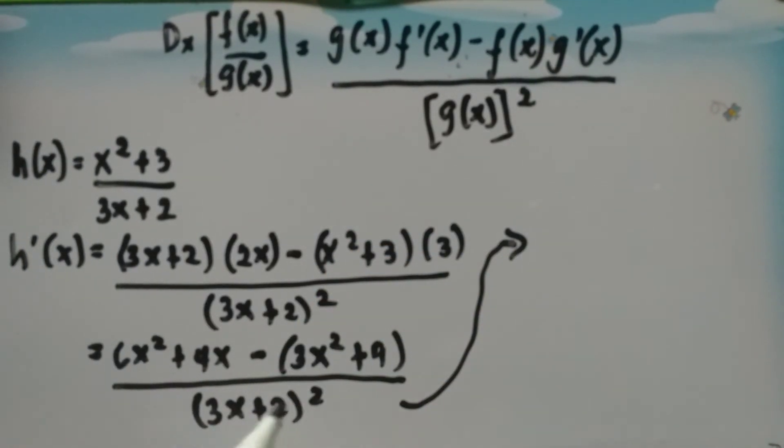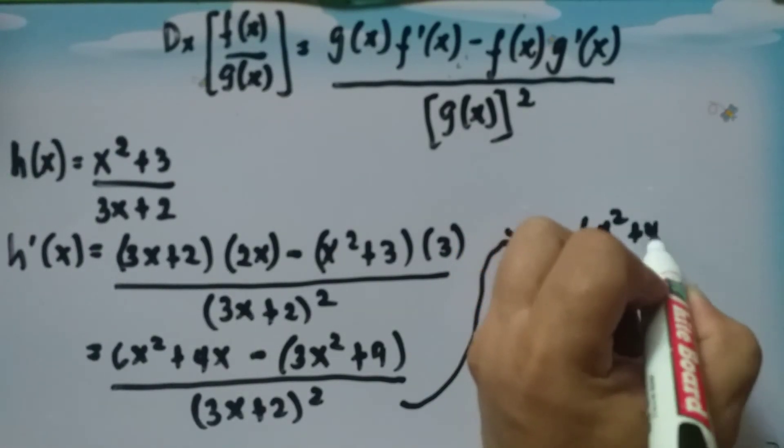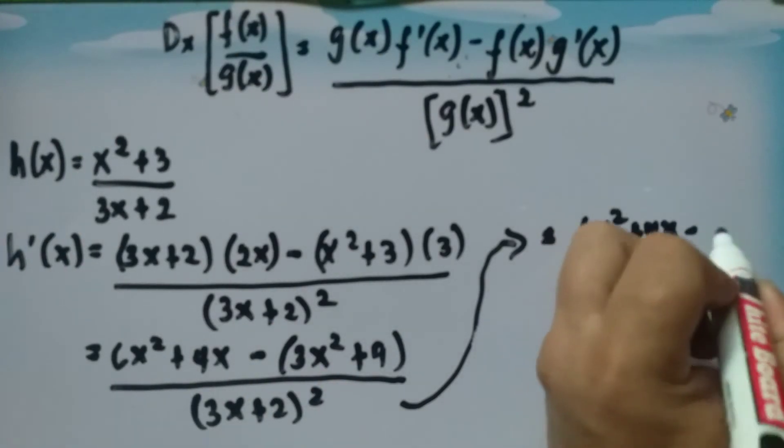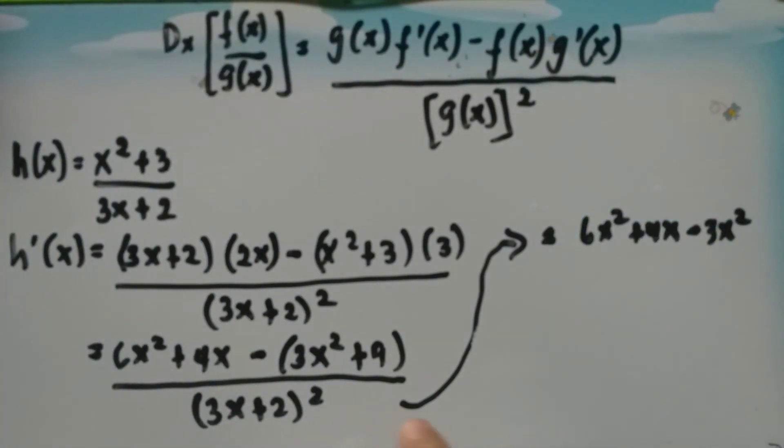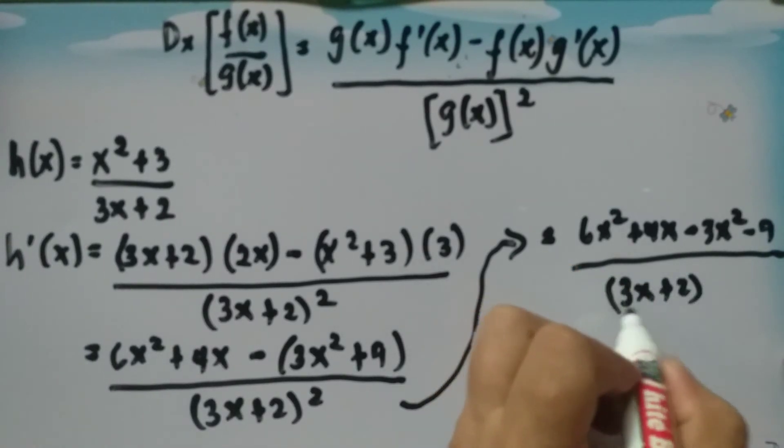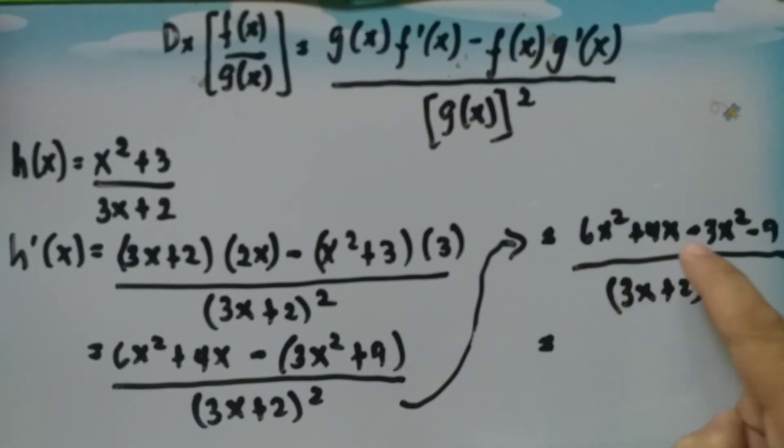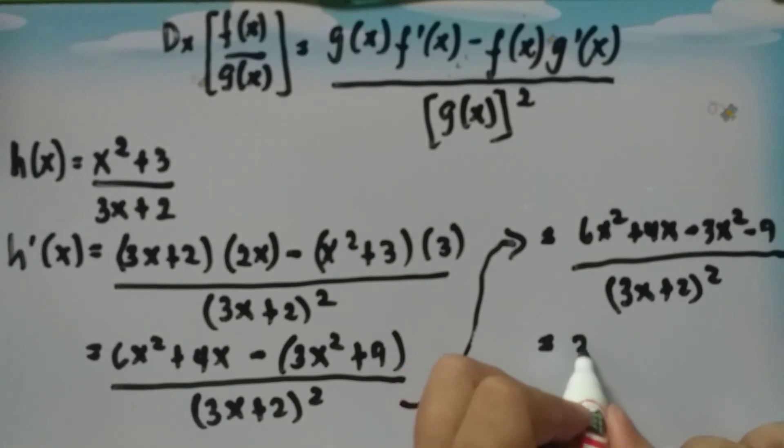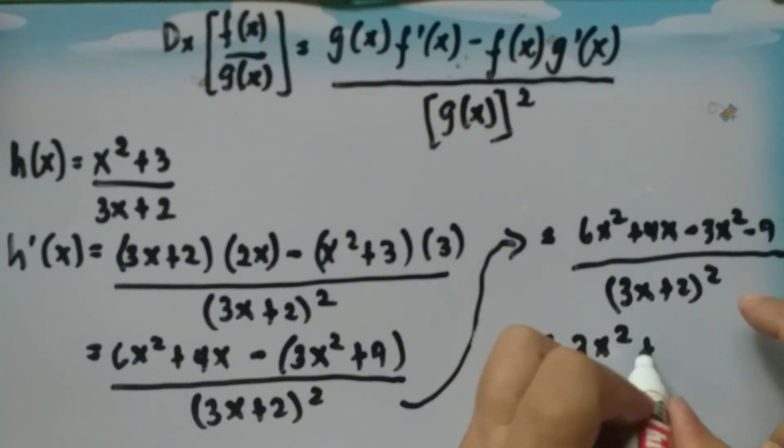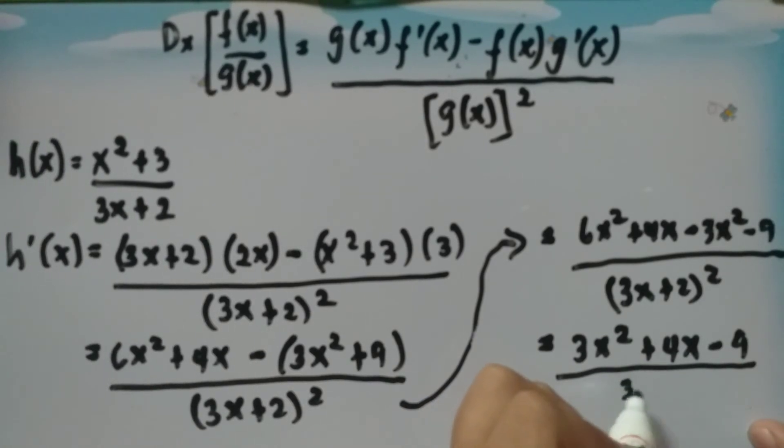Simplifying, we remove the parentheses: 6x squared plus 4x minus 3x squared minus 9, over 3x plus 2 squared. Combining like terms: 6x squared minus 3x squared is 3x squared, plus 4x minus 9, over 3x plus 2 squared.